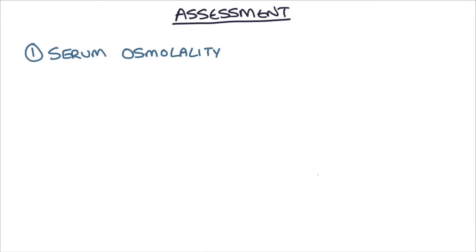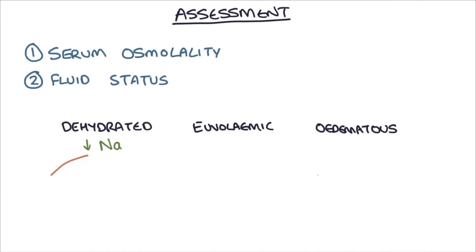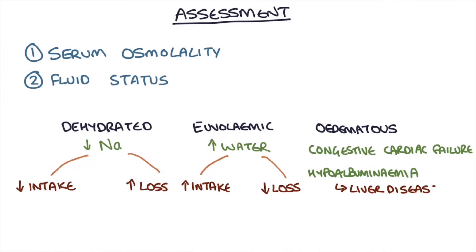So let's say you check the serum osmolality and it's low, suggesting a genuine hyponatremia. The next thing you want to check is the person's fluid status. This involves checking whether they are dehydrated, euvolemic or normally hydrated, or edematous. A dehydrated patient with hyponatremia will have an inadequate amount of sodium through inadequate intake or more likely through excessive sodium loss. A euvolemic or normally hydrated patient will have an excessive amount of water diluting the sodium in the blood, causing a dilutional hyponatremia. An edematous patient is likely to have congestive cardiac failure or hypoalbuminemia secondary to liver disease or nephrotic syndrome.